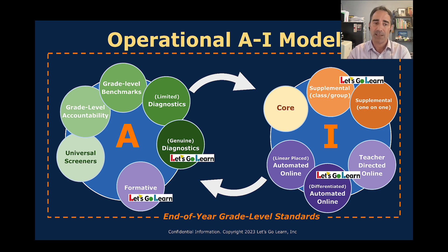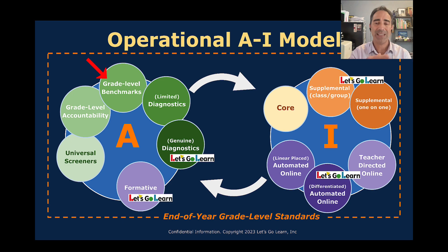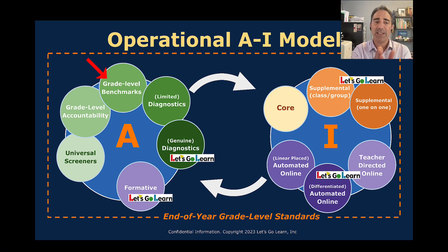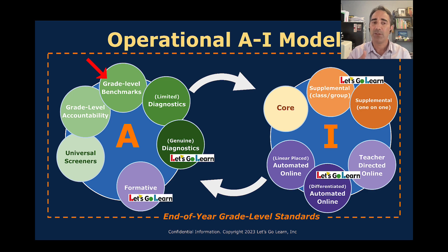The next type is grade level benchmarking, usually given by the district throughout the year — maybe beginning, middle, and end, or four times a year. This tells them whether the student is on track for that period of time: are they at the beginning, middle, or end of fifth grade? These grade level benchmarks give items one would expect students to have learned at that point in time, and results will be above, at, or below that expected point.